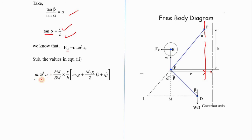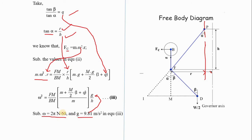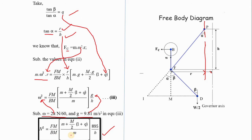Substituting ω = 2πN/60 and g = 9.81, the final formula becomes: N² = (FM/BM) × [m + M/2 × (1 + Q)] / m × 895/H. This is the formula for the Proell Governor.